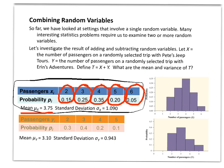The standard deviation uses a similar idea: we take each numerical value — the number of passengers — subtract the mean, square it to eliminate positive and negative signs, then multiply by its corresponding probability, and add that up for each event. For two passengers, we go 2 minus the mean 3.75, get a negative number, square that, then multiply by 0.15. Do the same for 3, 4, 5, and 6, and add them up. That gives us the variance, and the square root of that gives the standard deviation: 1.090.